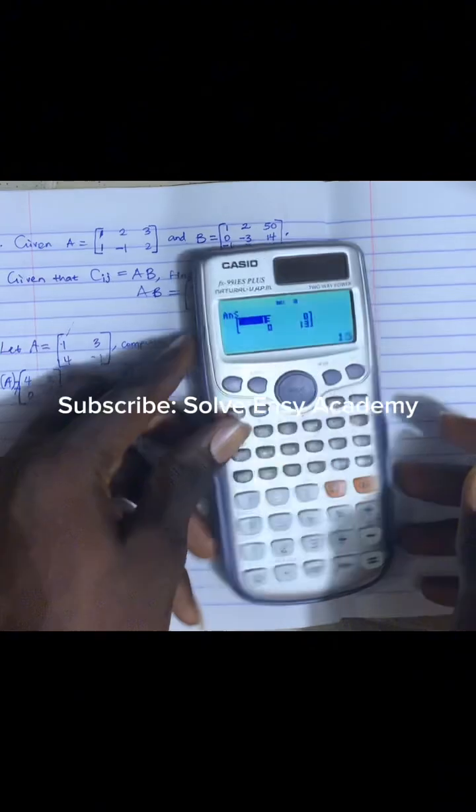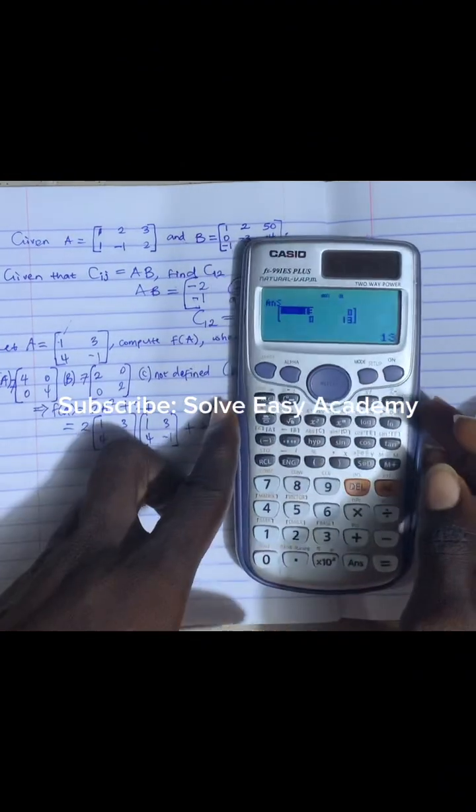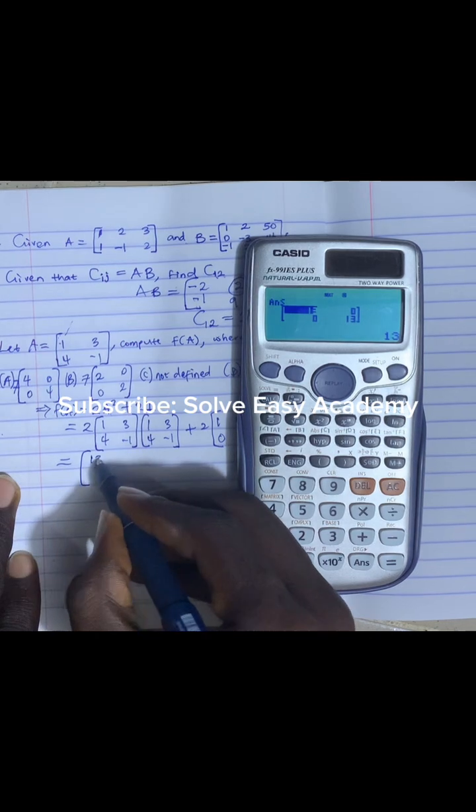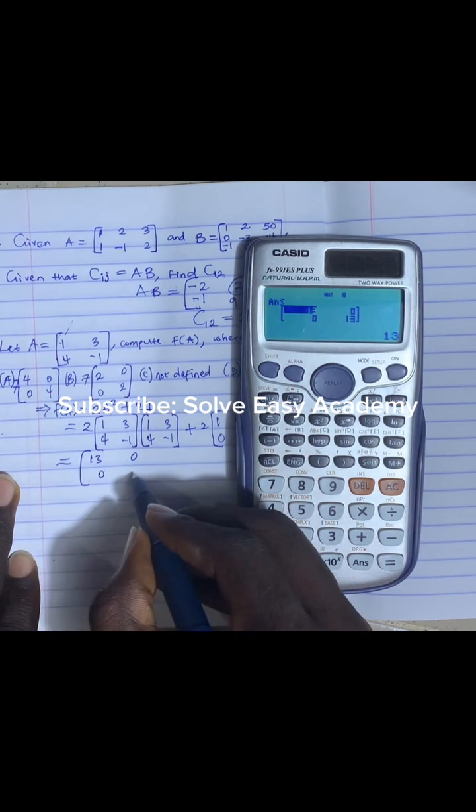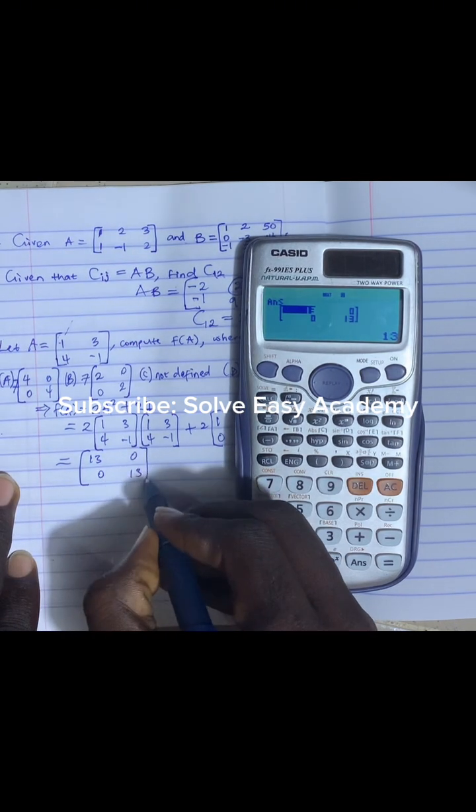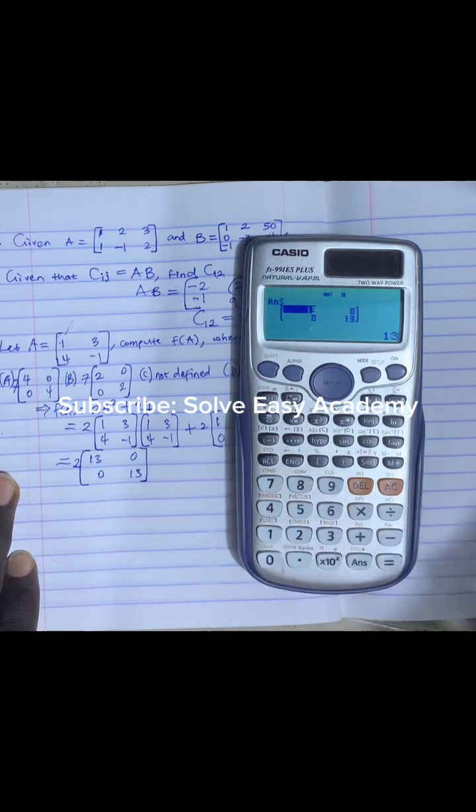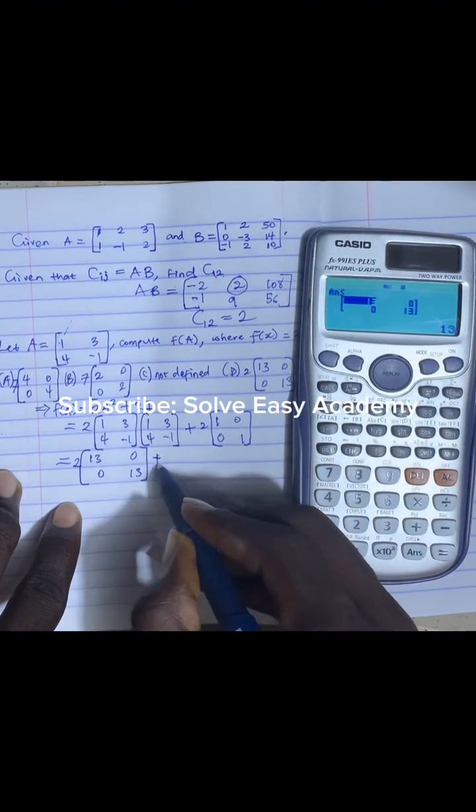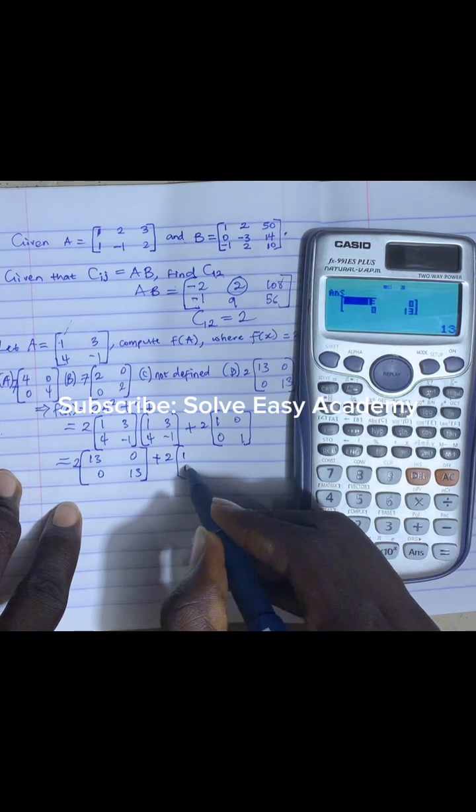This equals to - it gives us values for that matrix and our value for matrix is given by 13, 0, 0, 13. But guys don't forget we have 2 outside that matrix. This two was brought down, then we have plus 2 into 1, 0, 0, 1.